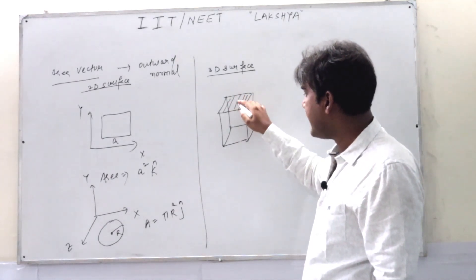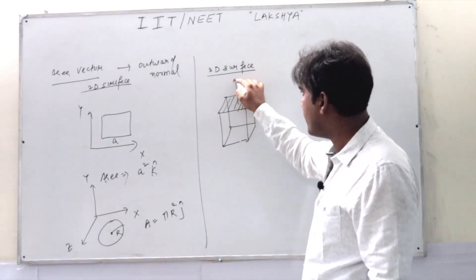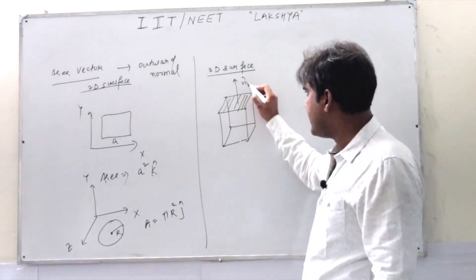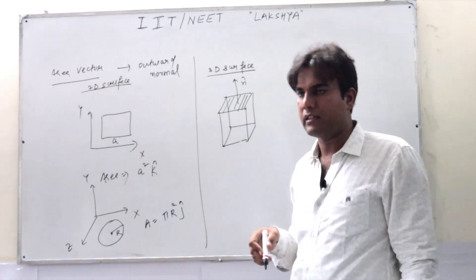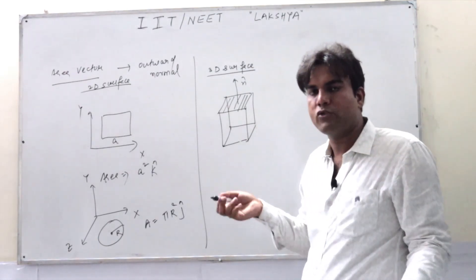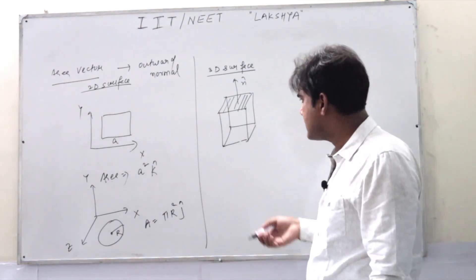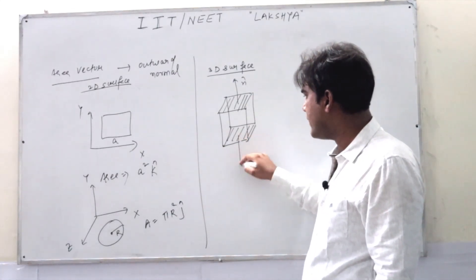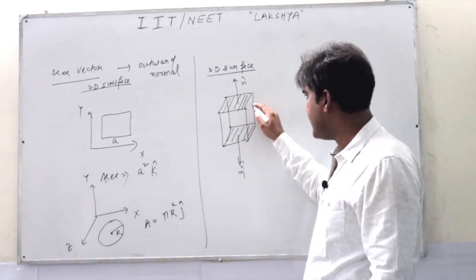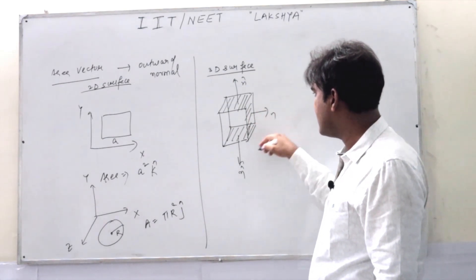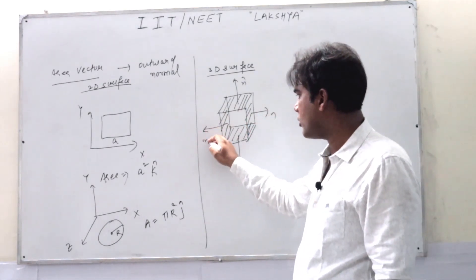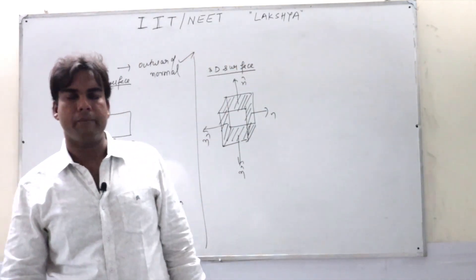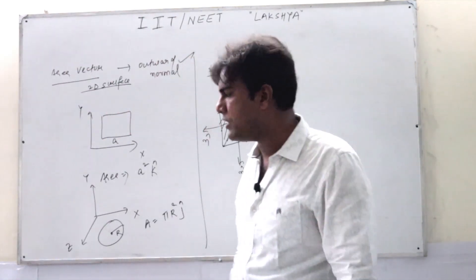A cube has six sides, six surfaces. If you want to take the area vector for the top surface, the magnitude is a² and the area vector uses the outward normal — n-cap, which can be k-cap, depending on how the cube is placed. For the downward surface, the magnitude is the same but then you take the downward outward normal. You should always take the outward normal as the area vector — this is a convention everyone has to follow.